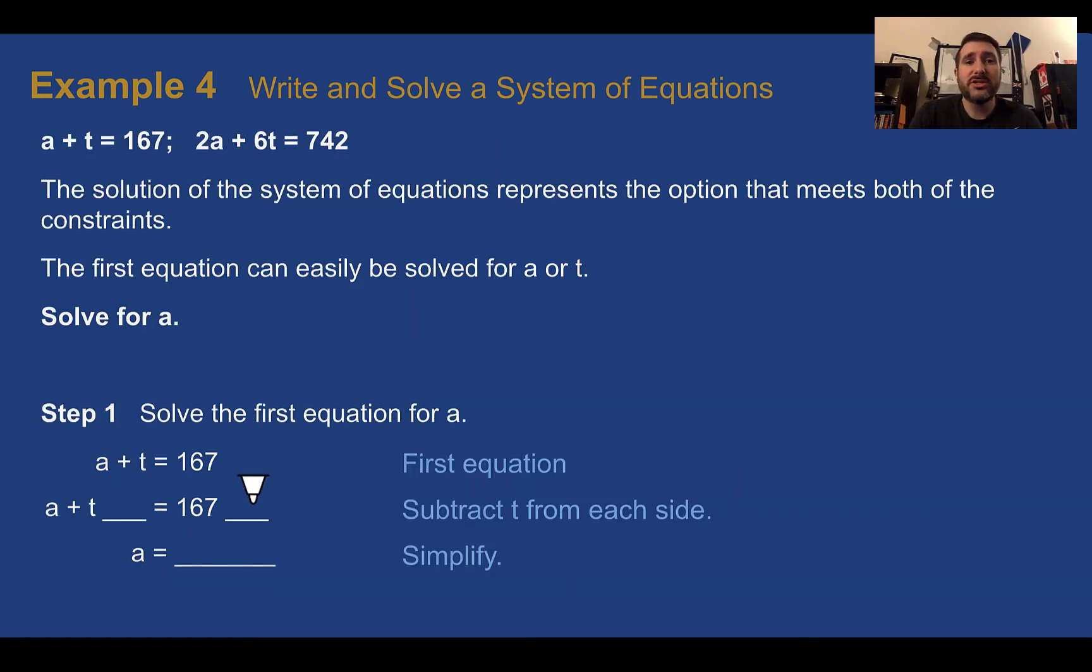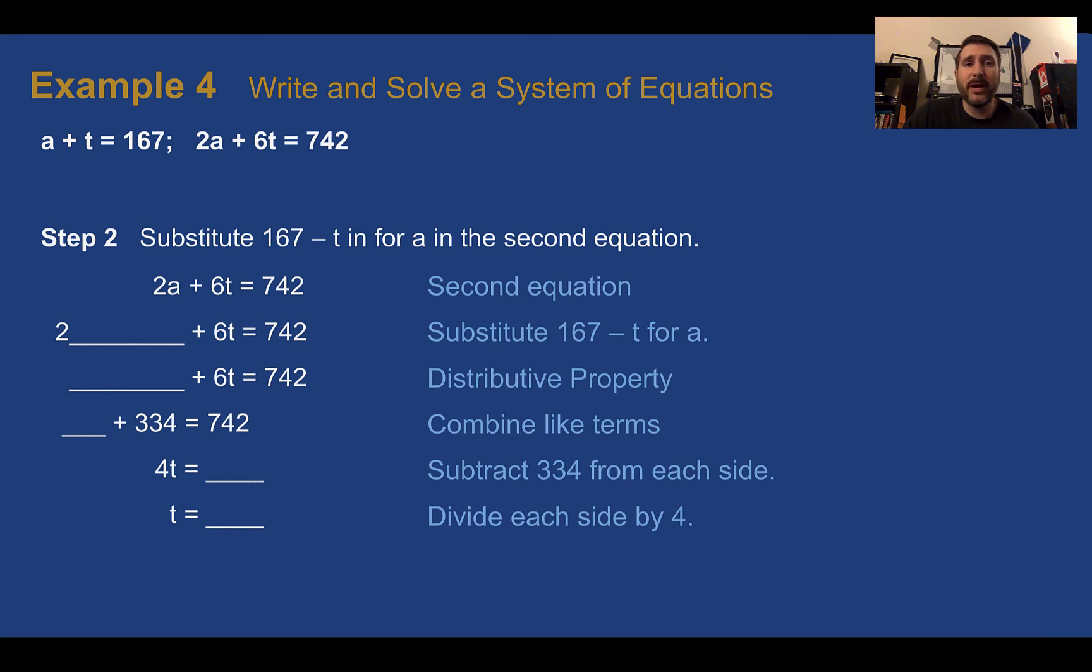Now, to solve this, we can use substitution. Our first equation here, A and T both have a coefficient of one, so either one works. Let's solve for A. So let's subtract T from both sides. A is equal to 167 minus T. Now let's just substitute 167 minus T in for A. Then, just like we've been doing, distribute out. We end up with 334 minus 2T. Combining the T terms, we have negative 2T plus 6T, which is 4T. Subtracting 334 from both sides, we get 408. Dividing both sides by 4, we end up with 102. So T is 102, meaning there were 102 saplings that were felled.